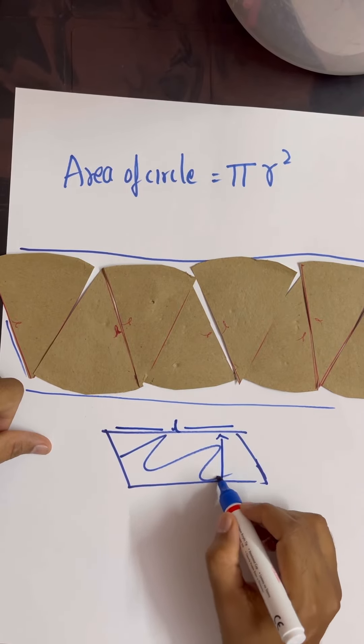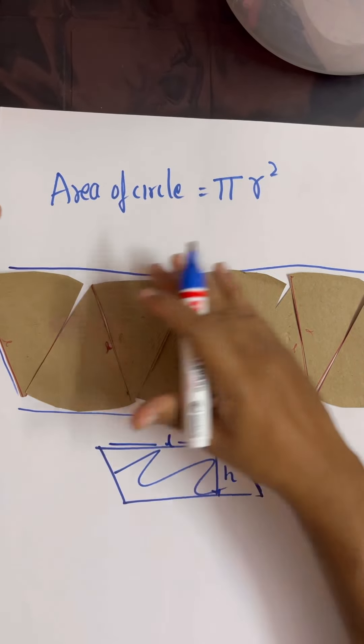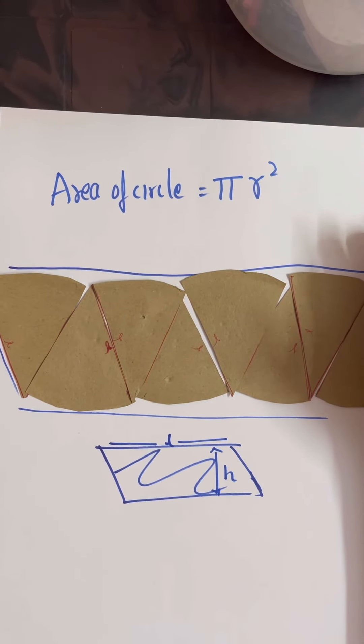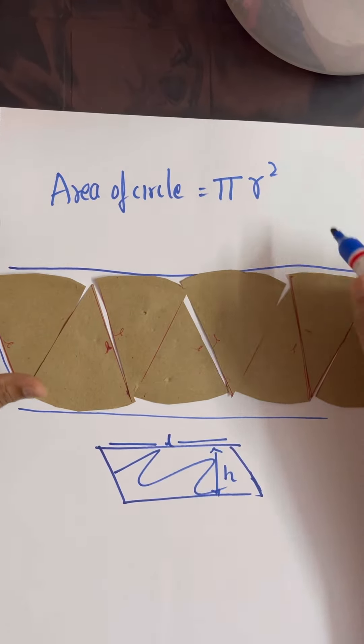Now coming here, what is the length or base of this parallelogram? You can clearly see this top part is half of the circumference. The circumference formula is 2πr. I have used a half circle, and this topmost part...